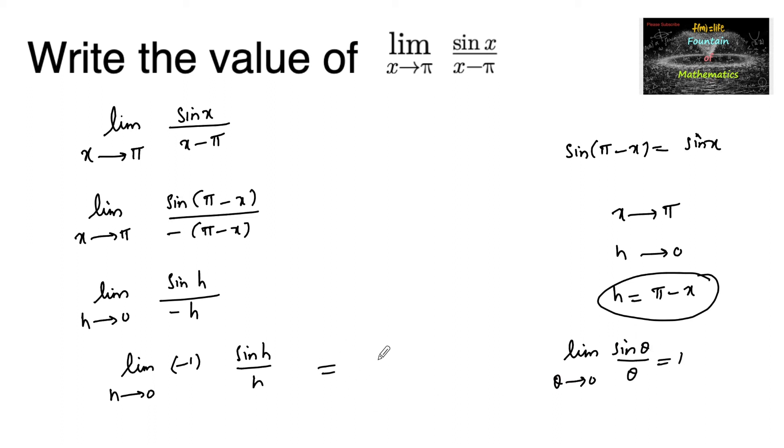So we can give the answer minus 1 into limit h tends to 0, sin h upon h is 1. So minus 1 is the answer. So limit x tends to pi, sin x upon x minus pi value is minus 1.